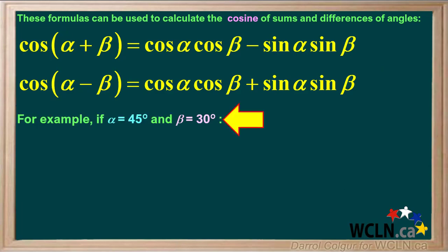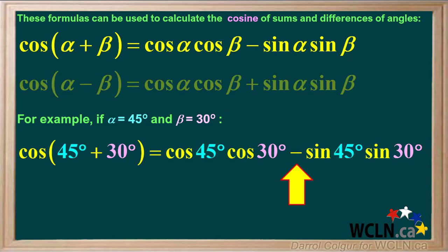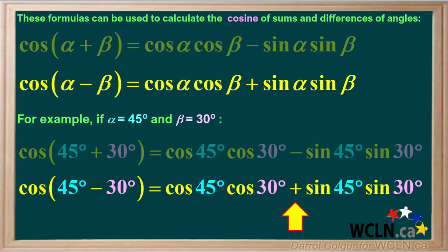For example, if alpha equals 45 degrees and beta equals 30 degrees, then cos(45° + 30°) equals cos 45 times cos 30 minus sin 45 sin 30, and cos(45° - 30°) equals cos 45 times cos 30 plus sin 45 sin 30.